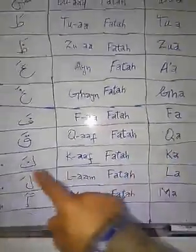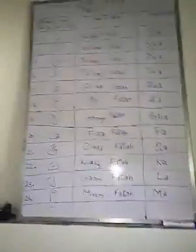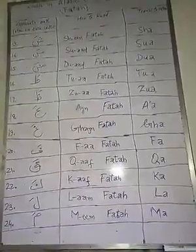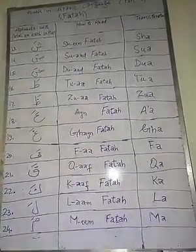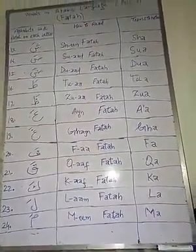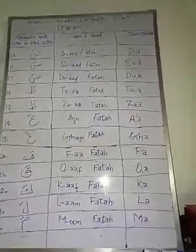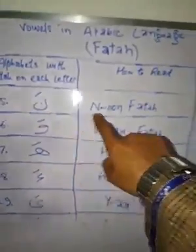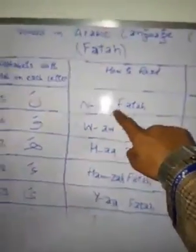Then Fa with Fatah, then Qaf with Fatah — Qaf Fatah is 'qa'. Then Kaf with Fatah — Kaf Fatah is 'ka'. The 23rd is Lam — Lam Fatah is 'la'. The 24th is Mim, having a short diagonal stroke — Mim Fatah is 'ma'. The 25th is Nun, having Fatah — Nun Fatah is 'na'.